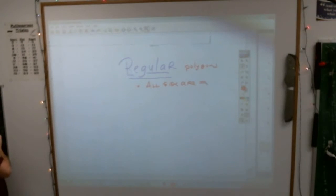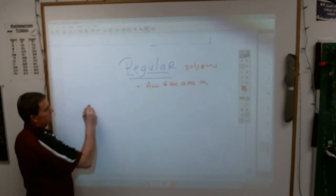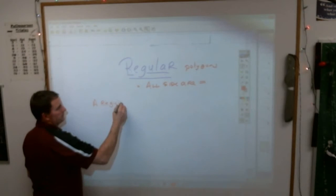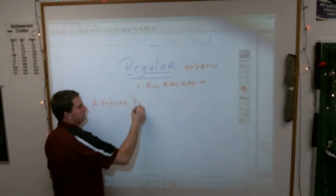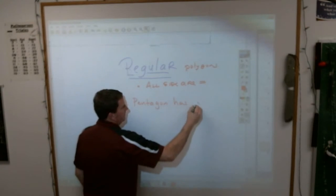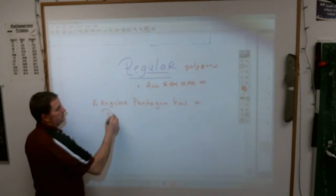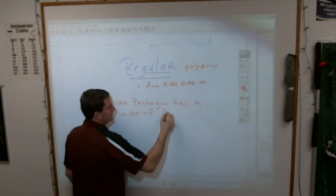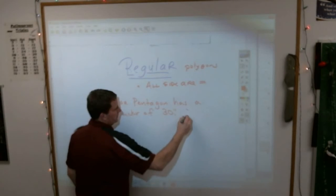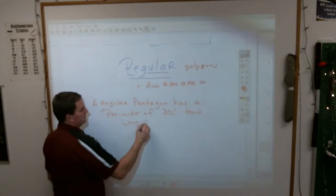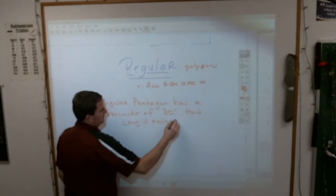And the reason you need to know that is because of this example problem. The book might say this: a regular pentagon has a perimeter of 30 inches. How long is each side?